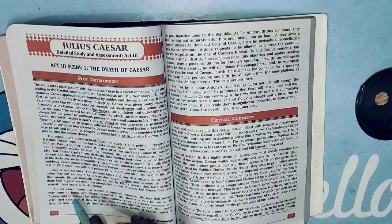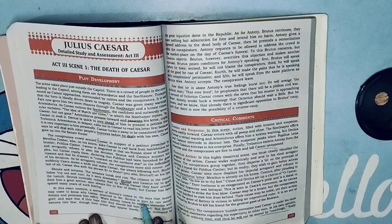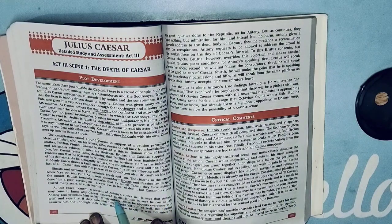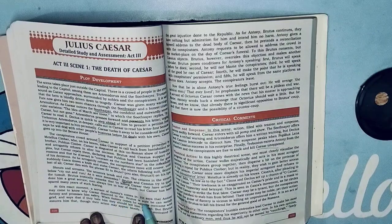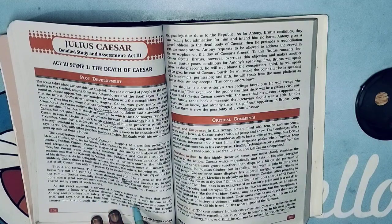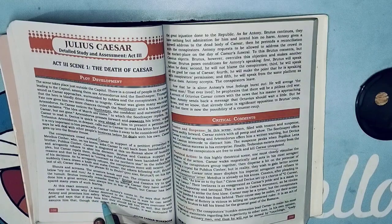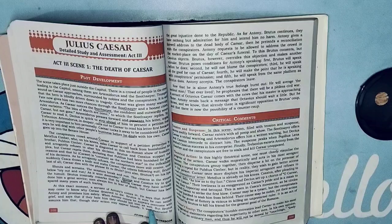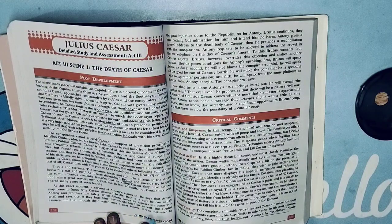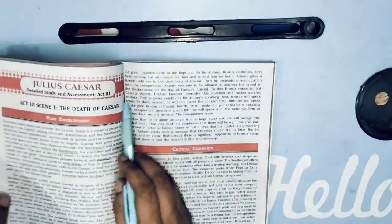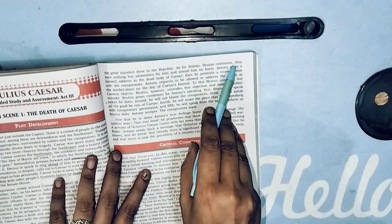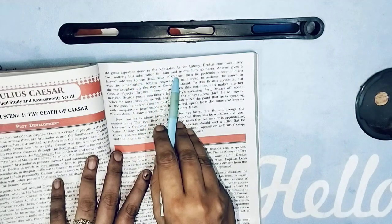At this exact moment a servant of Antony's comes in. He says that Antony may come to know why Caesar deserved to die. Brutus is sure he can satisfy Antony and promises him safety. When Antony comes, he appears overcome with grief and says that if they hate him, they should kill him as well. But Brutus assures him that though their actions may appear bloody, it was motivated by the great injustice done to the Republic. As for Antony, they have nothing but admiration for him and intend him no harm.